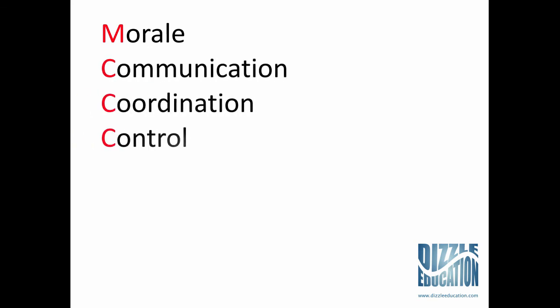So those are your four key dis-economies of scale: morale, communication, coordination, and control. If it helps to remember those in the exam, you can think about MCCC and try to remember what the M, the C, the C, and the C stand for. These are all internal dis-economies of scale within a firm — just like internal economies of scale, they are specific to the firm itself. If a firm gets too big, it starts to suffer from these dis-economies of scale.